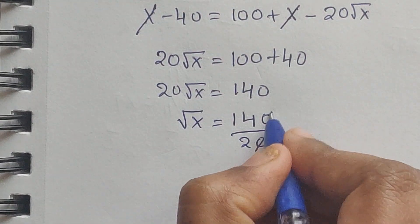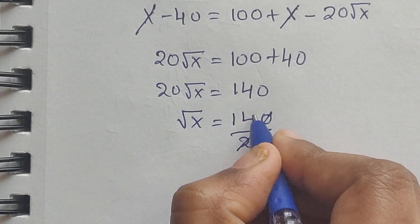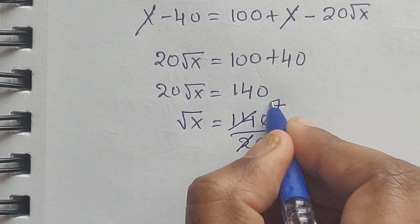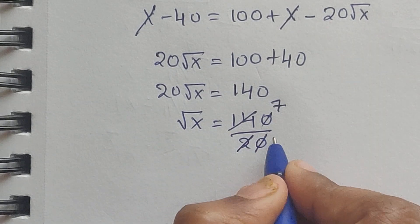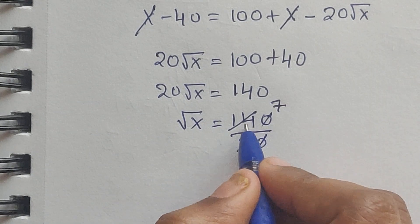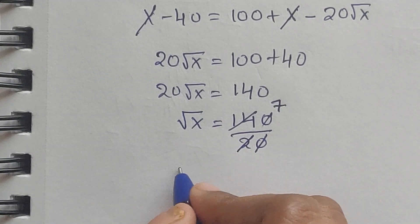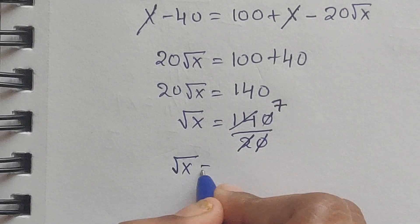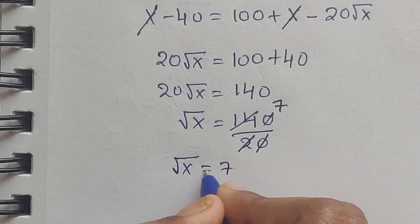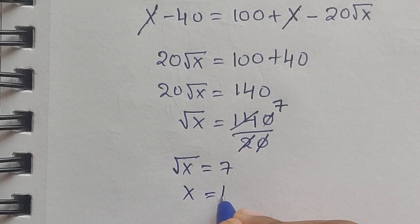So 20, 0, 0 cancel and 2 times 7 is equal to 140. So 20 times 7 which is equal to 140, and square root of x equal to 7, and x equal to 49.